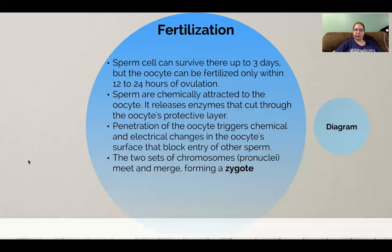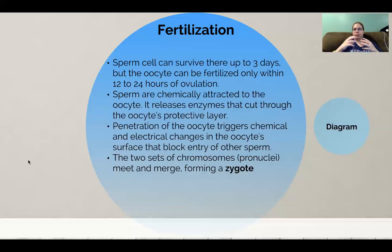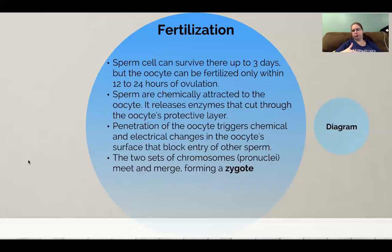When that occurs, the sperm is actually only going to use its head to fuse with the egg. Its midpiece and its tail fall off, and it is just the head — where the nucleus, or the pronuclei, is — that will enter the egg. Once this has occurred, the oocyte will trigger certain chemical and electrical changes to its surface that will prevent any other sperm from being able to penetrate and fuse with the egg as well.